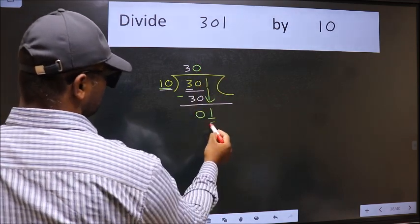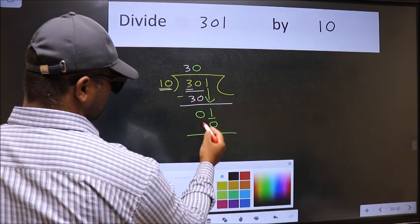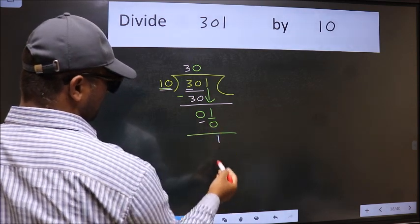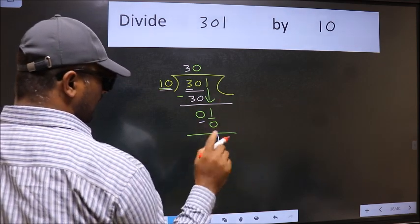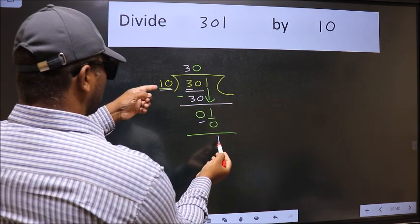So 10 into 0 is 0. Now we should subtract. We get 1. Over here we did not bring any number down, and 1 is smaller than 10.